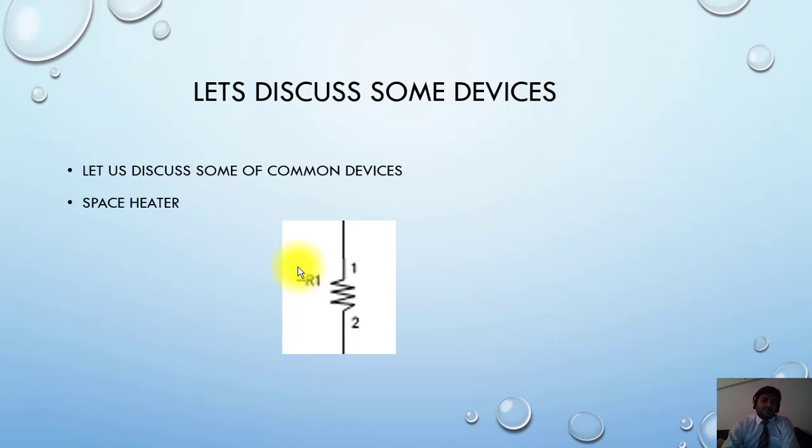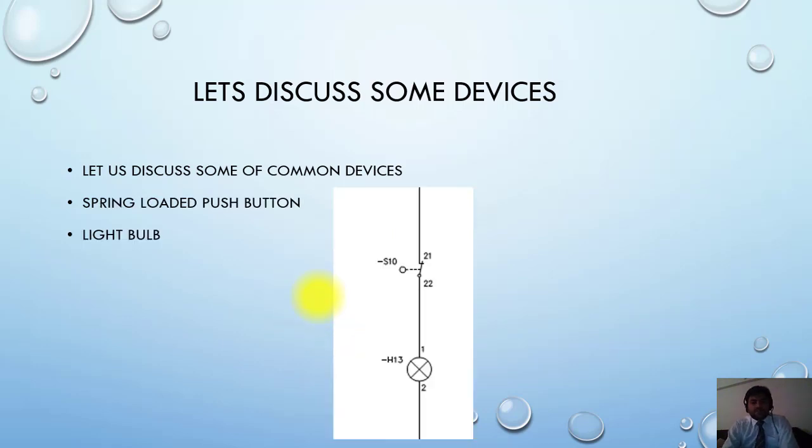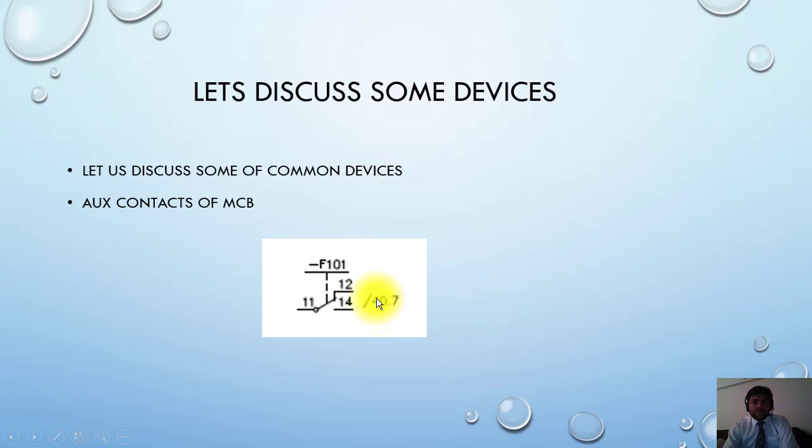Next is another symbol. This is the light symbol. H13 is normally used for this. H is normally used for the bulb. S10 is a spring-loaded switch. It will close only when the door is open. This is another symbol that you can understand.